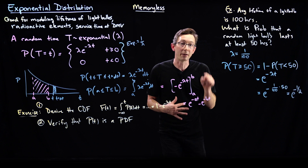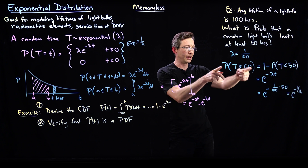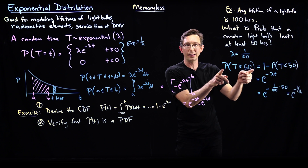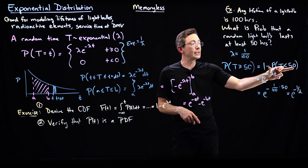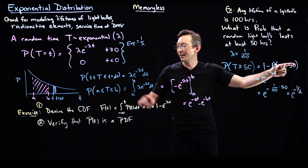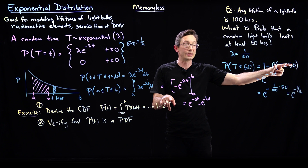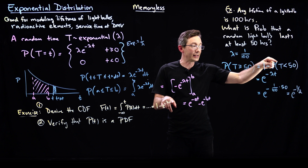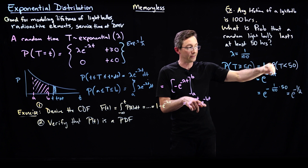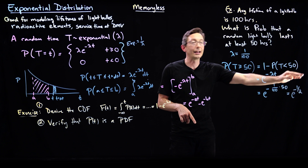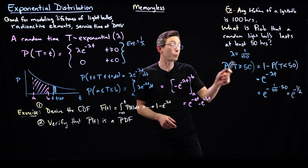I want you to pause the video and work through the actual steps. The probability that it lasts greater than 50 is 1 minus the probability it fails less than 50. The probability of T less than 50 is the CDF, which is 1 minus e to the minus lambda t. Taking 1 minus that gives e to the minus lambda t, where little t is 50, so I get e to the minus one-half. Pretty easy to compute with, and really useful.